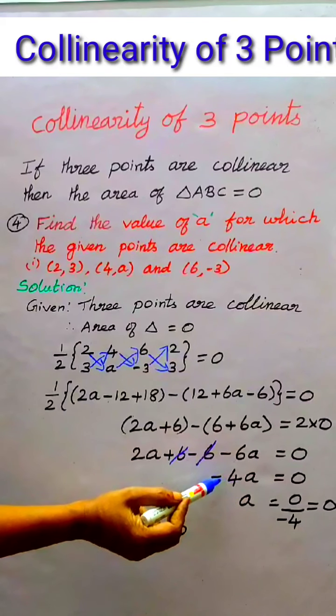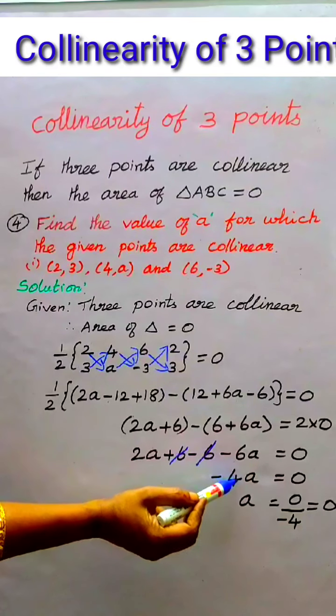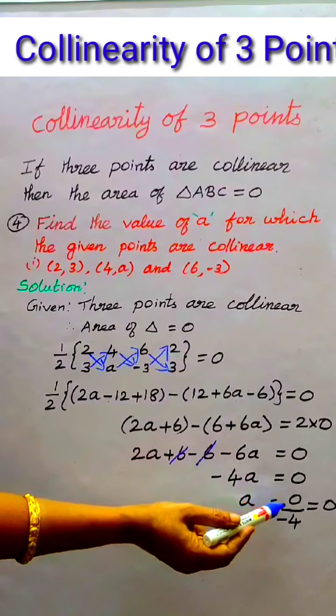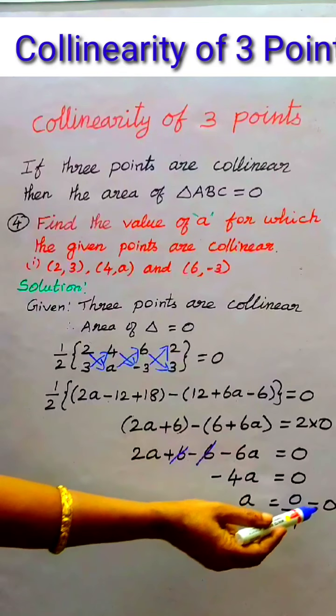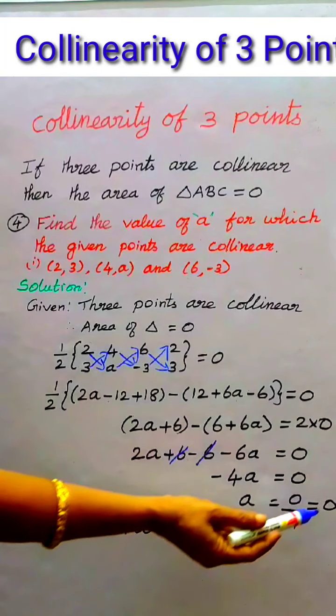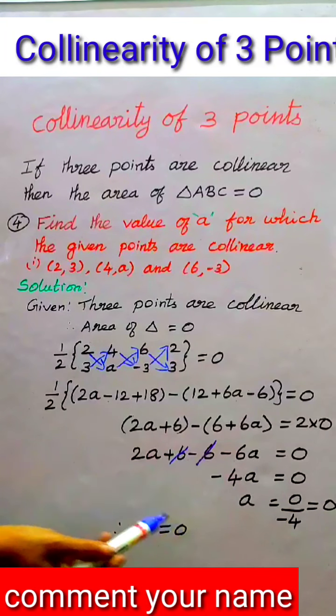We have to divide by this minus 4. So A equals 0 divided by minus 4, which equals 0. Zero divided by anything is 0. Therefore, the value of A is equal to 0.